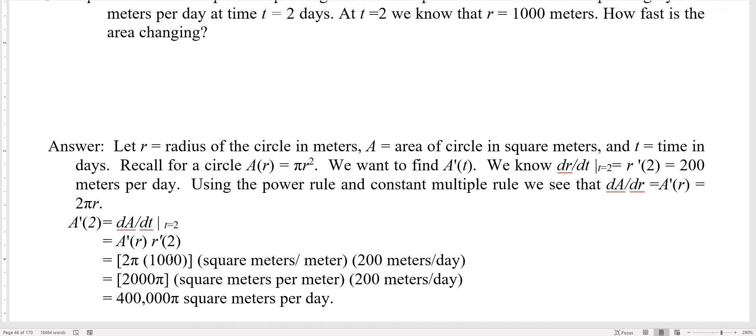So what is A prime at two? That's dA/dt at t equals two, thinking of A as a function of t. It's A prime of r times r prime of two. A prime of r is 2 pi r, that's 2 pi times 1,000 — in square meters of area per meter of radius — times 200 meters per day, which is how fast the radius is changing. The meters of radius cancel between numerator and denominator, leaving square meters of area per day.